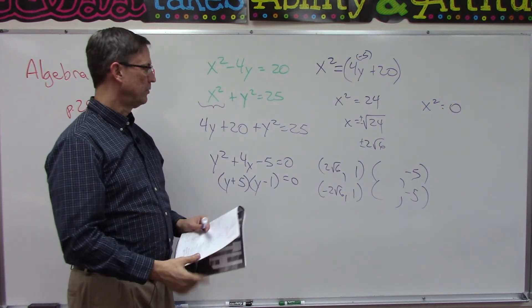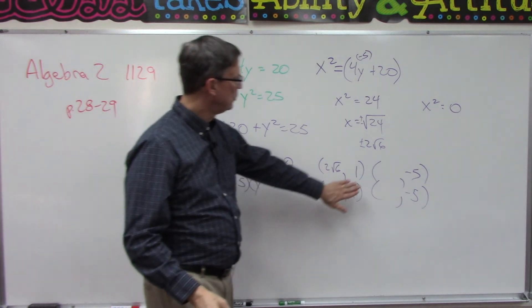Negative 20 plus 20 gives me zero. So there's only one answer for x, so you're not going to have two here, you're only going to have one.